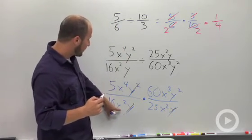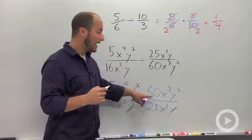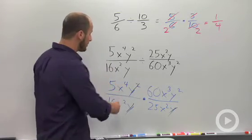We then have an x squared and an x squared in the bottom, and an x to the fourth in the top. Those can cancel.